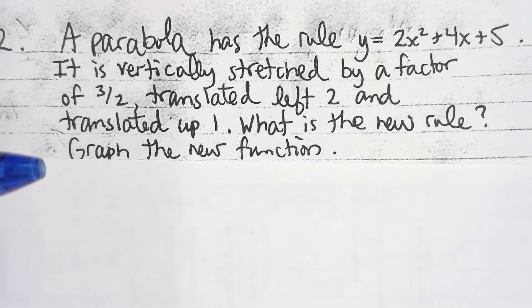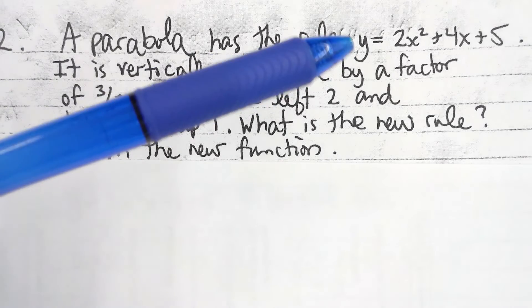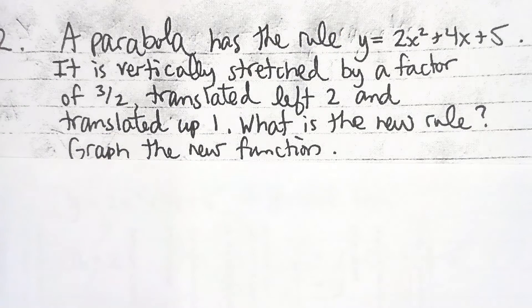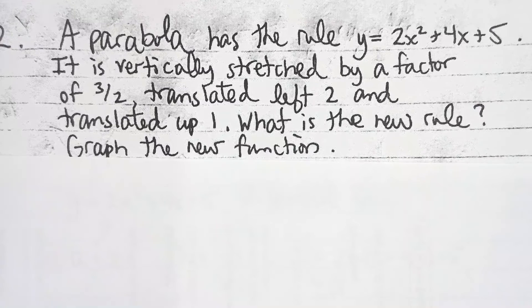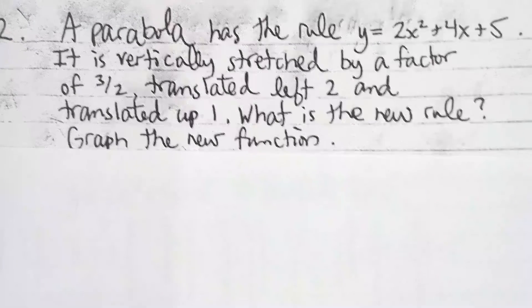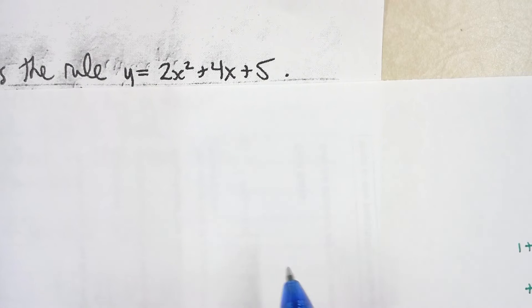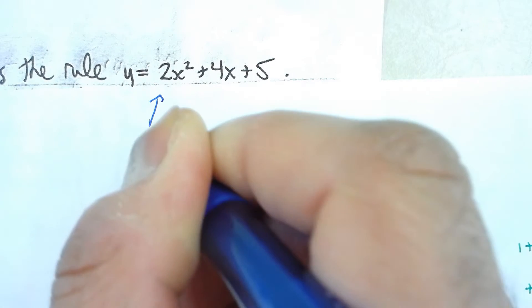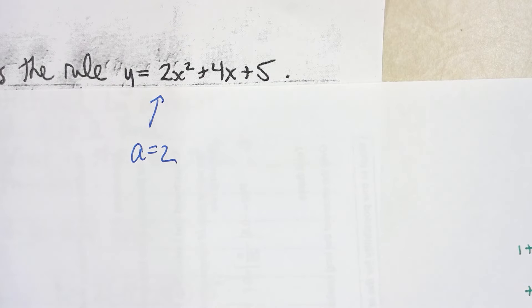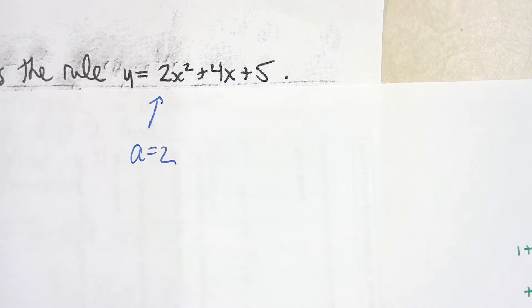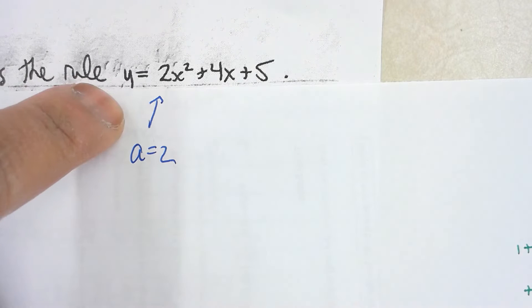Before you stretch or shrink or do anything to it, your rule is currently in general form. General form is not very useful for us — it doesn't give you the parameters. Let's have a mini conversation about general form. For y equals 2x squared plus 4x plus 5: general form gives us a, b, and c. The a value is 2 — it's the same a in every form: general, standard, and factored. Don't recalculate it.